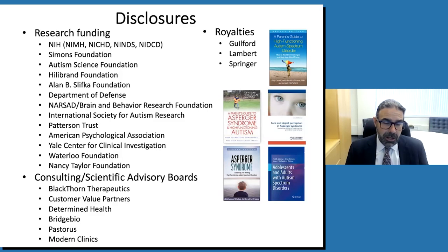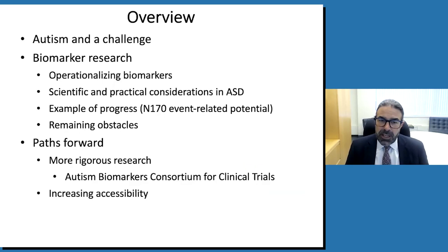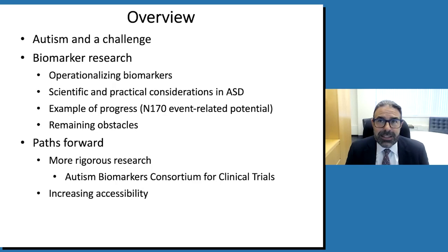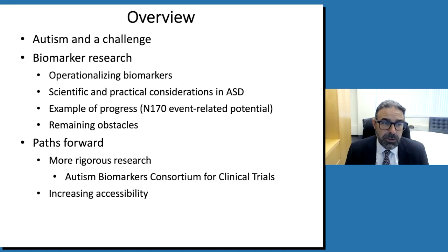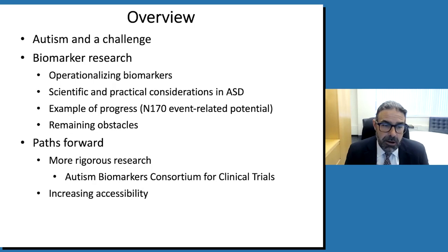I want to speak very briefly about autism insofar as how I think about studying it in terms of biomarker development. Then I'll talk about the context of biomarker development in autism, how we might operationalize biomarkers, and scientific and practical considerations relevant to autism. I'll discuss work I've done over almost two decades on a particular biomarker called the N170 event-related potential, challenges to moving forward, strategies, a consortium called the Autism Biomarkers Consortium for Clinical Trials, and nascent work to improve accessibility of this research across the autism spectrum.